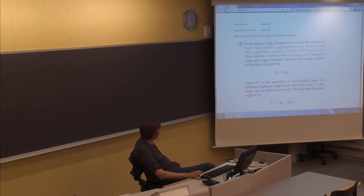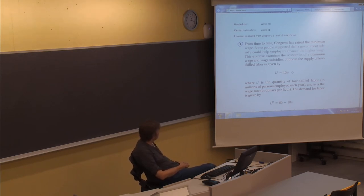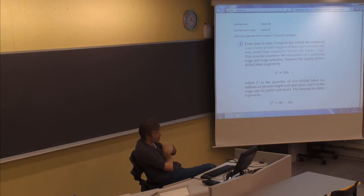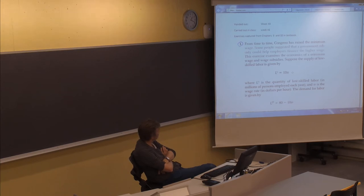This is an exercise. It seems to be combined exercises from chapters nine and ten. I think the first one is picked from chapter nine. It says here: from time to time, Congress has raised the minimum wage. Some people suggested that a government subsidy could help employers finance the higher wage.